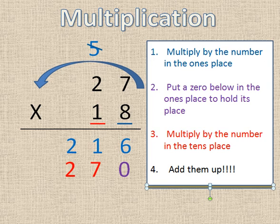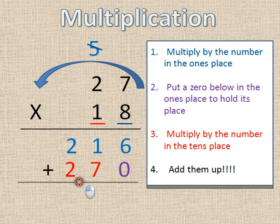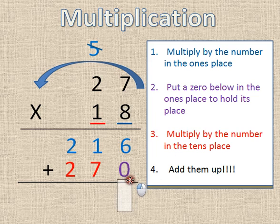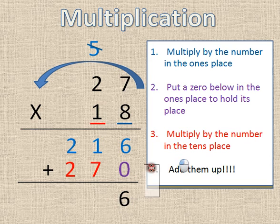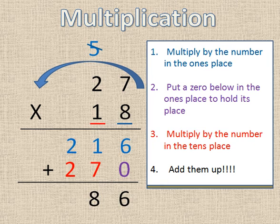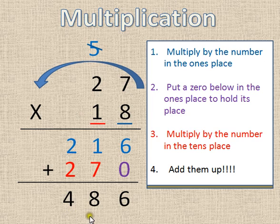Add them up. So I'm going to put my addition sign right here. And I'm going to put my equal sign underneath so I can add them up to get the answer. Six plus zero is six. One plus seven is eight. Two plus two is four. So twenty-seven times eighteen is four hundred eighty-six.